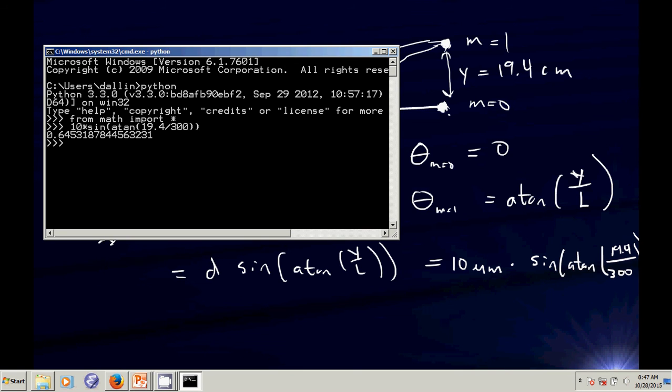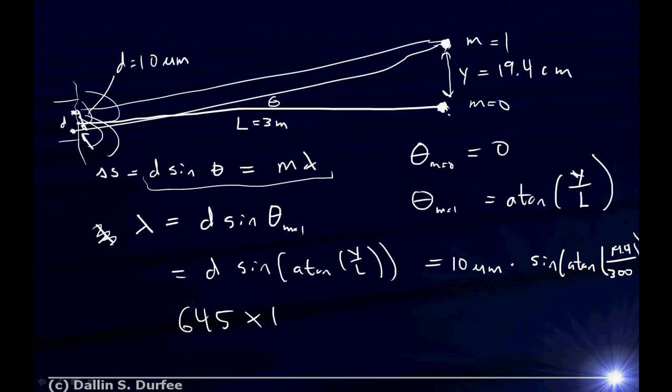So that's 6.45 microns. Or 0.645 microns. Or 0.645 times 10 to the minus 6. If I move it over 3, then I get 645 times 10 to the minus 9th, or 645 times 10 to the minus 9th meters, or 645 nanometers.